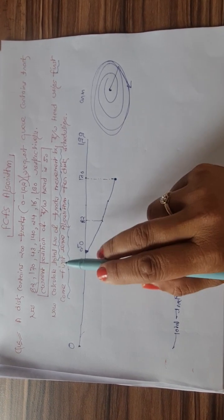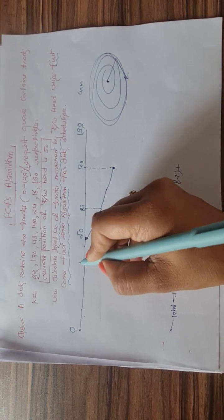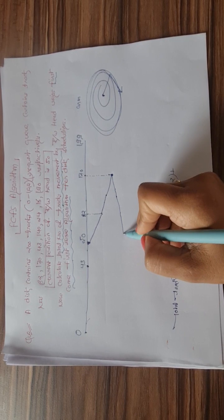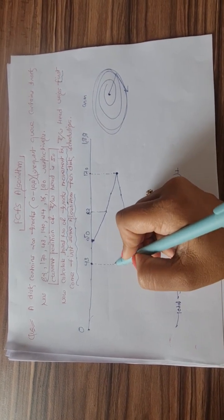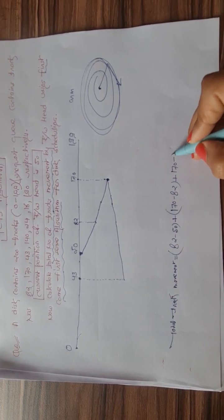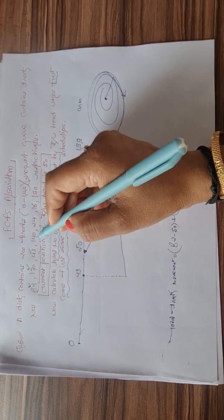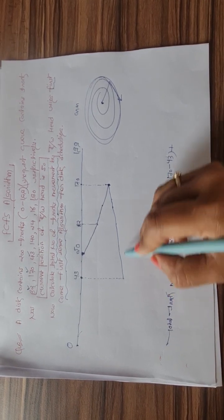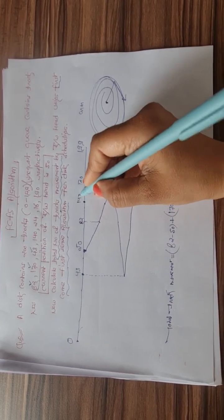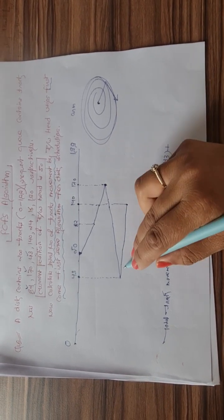The third track in the queue is 43. To reach 43 we must move backward, so the read/write head moves back and this movement equals 170 minus 43. Next, the fourth track is 140, which requires moving forward again. We mark 140 on the diagram and this movement equals 140 minus 43.